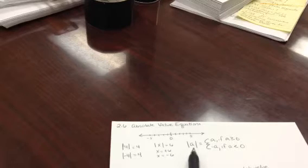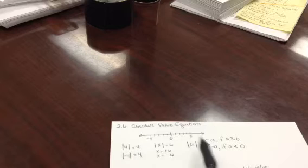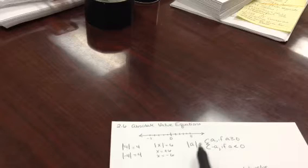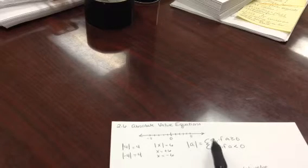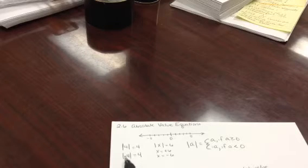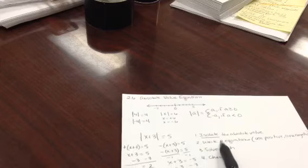The general statement is: the absolute value of some number a equals a if a is positive or zero, but equals negative a if a is negative. So the absolute value of a positive number is itself, and the absolute value of a negative number is the negative of it. For example, negative of negative four is positive four.